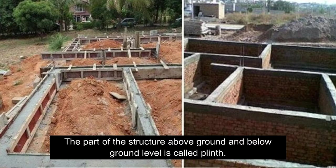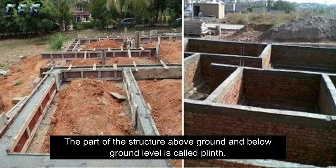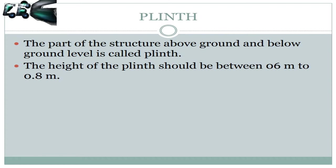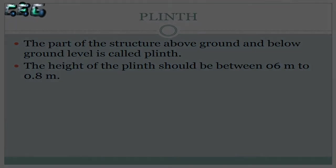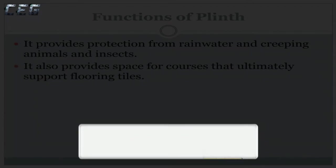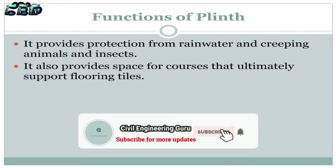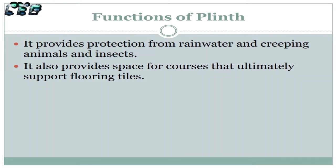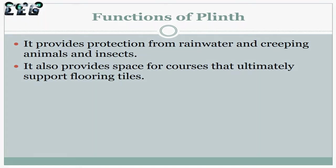Plinth: The part of the structure above ground and below floor level is called plinth. The height of the plinth should be between 0.6m to 0.8 meters. It provides protection from rainwater and creeping animals and insects, and also provides space for courses that ultimately support flooring tiles.